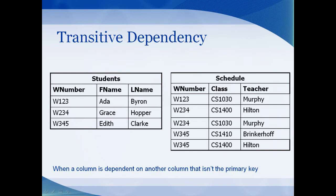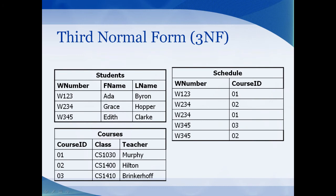To prepare for Third Normal Form, we look for transitive dependencies. A transitive dependency is when one item is dependent on another item in the field that's not the primary key. For example, the teacher: Murphy's teaching CS1030. Professor Hilton is probably teaching other classes, and there might be more than one Professor Hilton. We remove transitive dependencies by adding another table with a new primary key called course ID. Now the class and the teacher are both dependent upon the course ID. This is now in Third Normal Form, or 3NF.